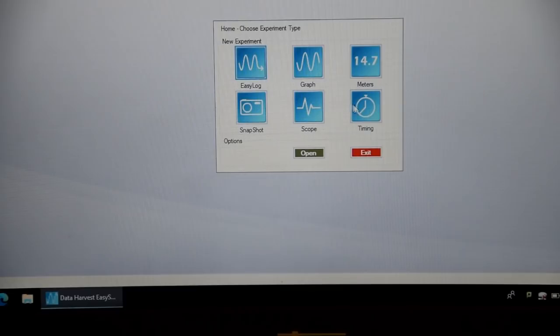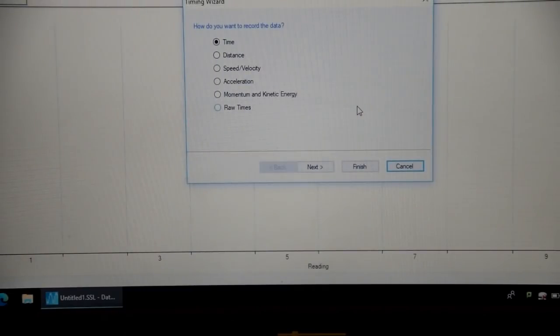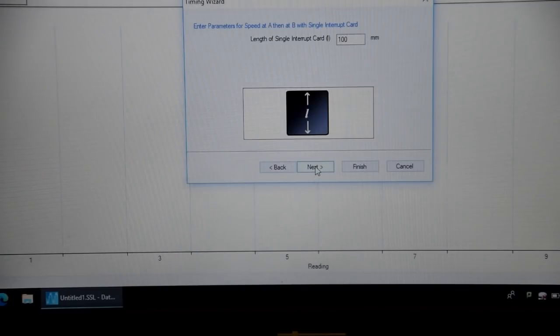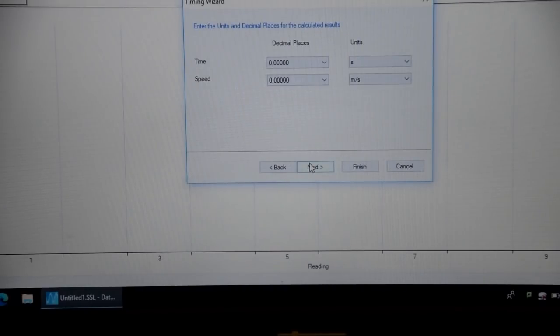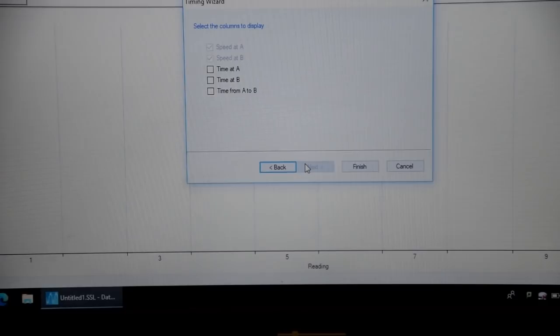This is the sort of thing you will see on screen. We're using EasySense 5. First of all, we're going to measure velocity. We're only measuring it at one point. We call this point A. The length of the interrupt card is 5 cm or 50 mm, and we're not looking for too great of precision. Let's just stick to two decimal places. There are other options, but let's just stick to recording velocity.